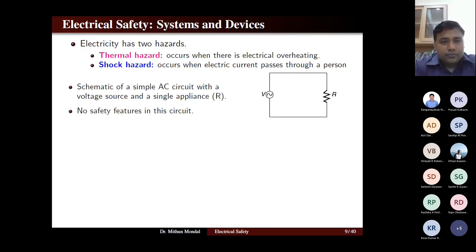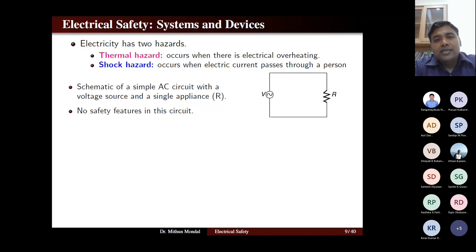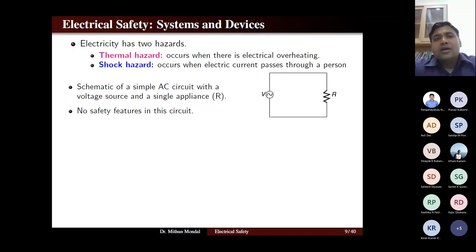To understand the safety process, let us look at a simple AC circuit: a source with varying voltage connected to a device represented by a resistance. This circuit has no safety features — no earth, earthing, grounding, or bonding — and helps us understand how fault and electrical safety can be analyzed. If we add safety features, we give the outer case of the appliance insulation from the supply and connect a circuit breaker at the source.